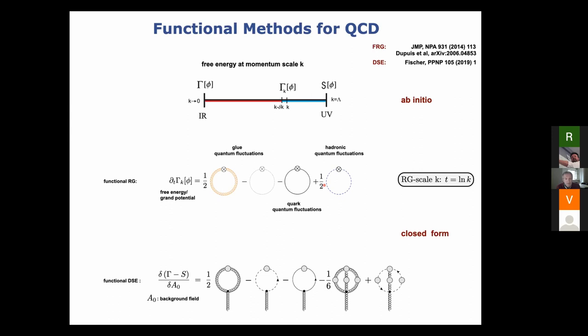Just for comparison to what Christian presented on Monday, I put down the Dyson-Schwinger equation for QCD. You can see the similarities — these three diagrams look the same as those three diagrams. There is a derivative in the Dyson-Schwinger equation because it involves a derivative with respect to the field, but apart from that it looks similar. The two-loop terms present in the Dyson-Schwinger equation are not present here.